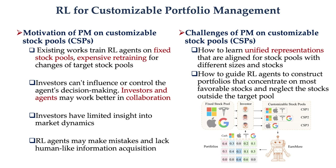Investors and agents may work better with each other in collaboration. On one hand, investors have a limited understanding of stock trends, hidden connections among stocks, and the overall market dynamics. On the other hand, the RL agent may make occasional decision errors and lacks the human capacity to acquire information in diverse ways. All of these factors can result in diminished or suboptimal returns.